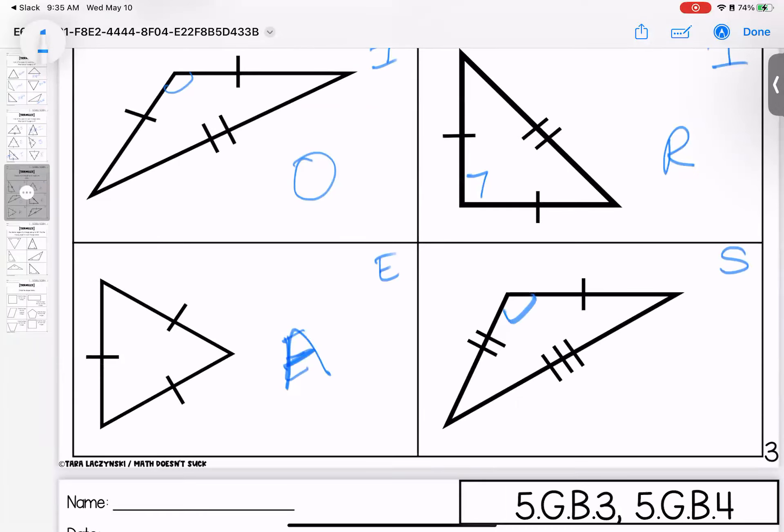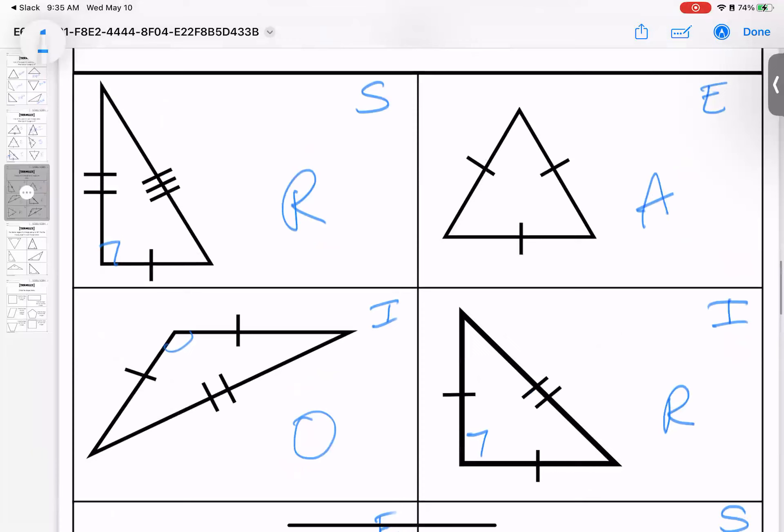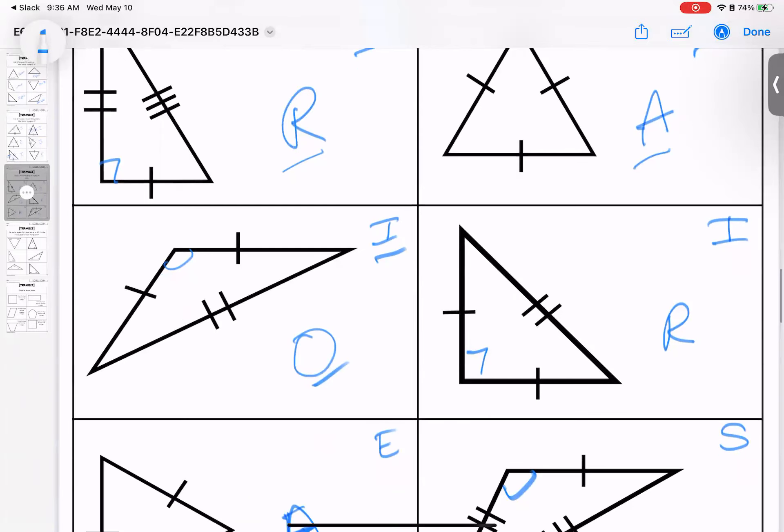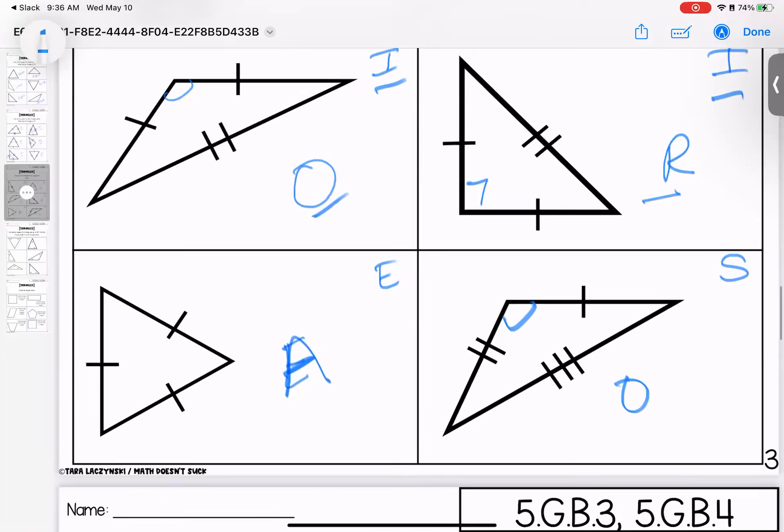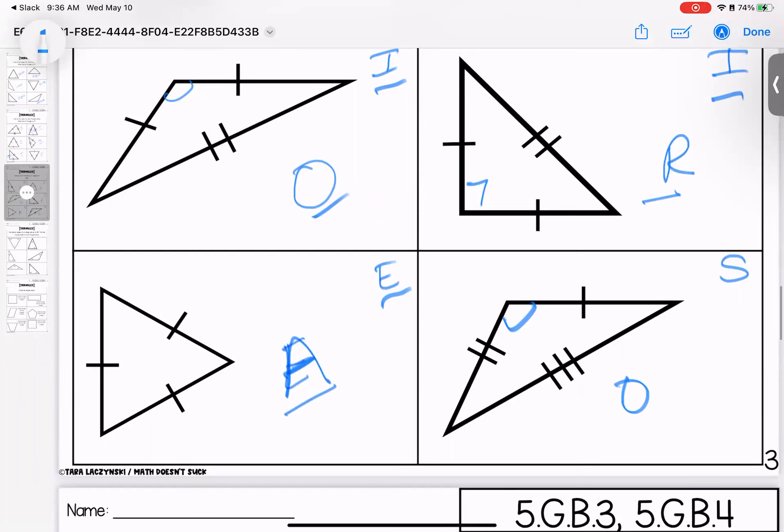And then one obtuse. So if we go back, this is going to be a right scalene, acute equilateral, obtuse isosceles, right isosceles, acute equilateral, and obtuse scalene.